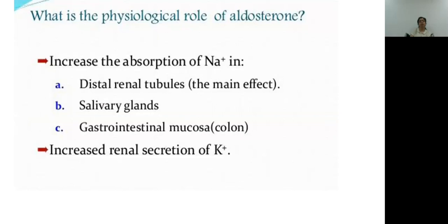The physiological role of aldosterone: aldosterone increases the absorption of sodium, mainly in the distal convoluted tubule and the collecting ducts of the nephron. There is sodium absorption and potassium secretion. This effect also occurs in the skin, salivary glands, and gastrointestinal mucosa.